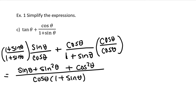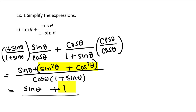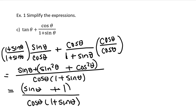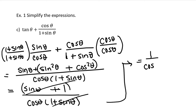Now we have another Pythagorean identity: sine squared theta plus cosine squared theta equals 1. So I'll replace sine squared theta and cosine squared theta with 1. The denominator is still cosine theta times 1 plus sine theta. We see a cancellation: the sine theta plus 1 in the numerator and the 1 plus sine theta in the denominator cancel, leaving us with 1 over cosine theta, which is the reciprocal identity for secant theta.